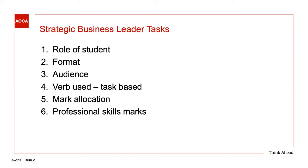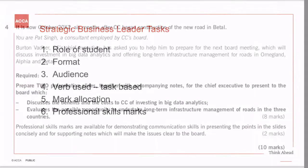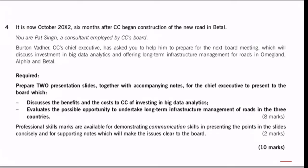Let's now look in more detail at the question. We can see that we're supposed to produce two slides with accompanying notes for the chief executive who's going to present to the board. It's a slightly convoluted requirement — you're giving notes to the chief executive, he's going to present them to the board. Slide one uses the verb 'discuss the benefits and costs of investing in big data,' and slide two asks us to 'evaluate the possible opportunity of undertaking long-term infrastructure management of roads in the three countries.' There are eight marks awarded with two professional skills marks for communication skills.